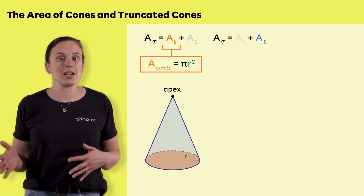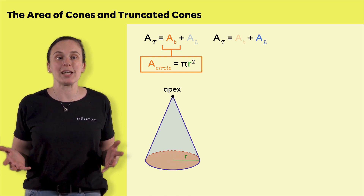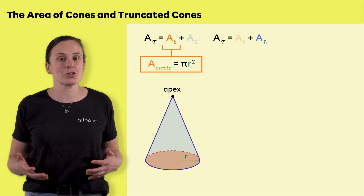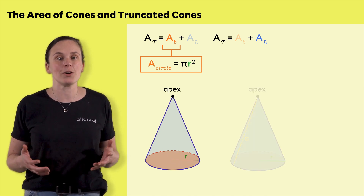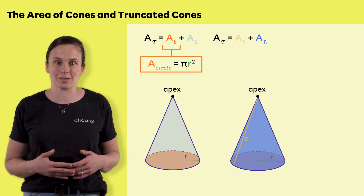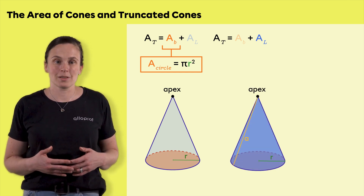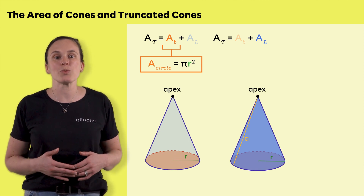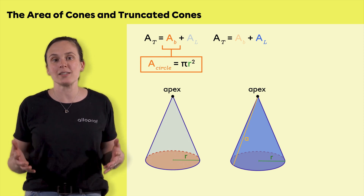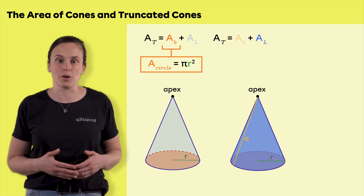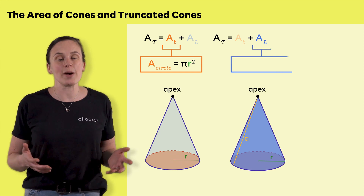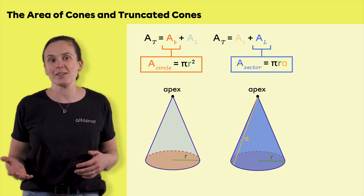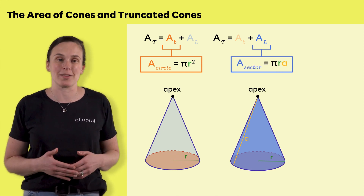The lateral area, usually denoted A subscript L, is the surface of the cone that does not serve as its base. The lateral face of a cone is always represented by a sector of a circle. To find its area, you have to multiply pi by the radius and the apothem.